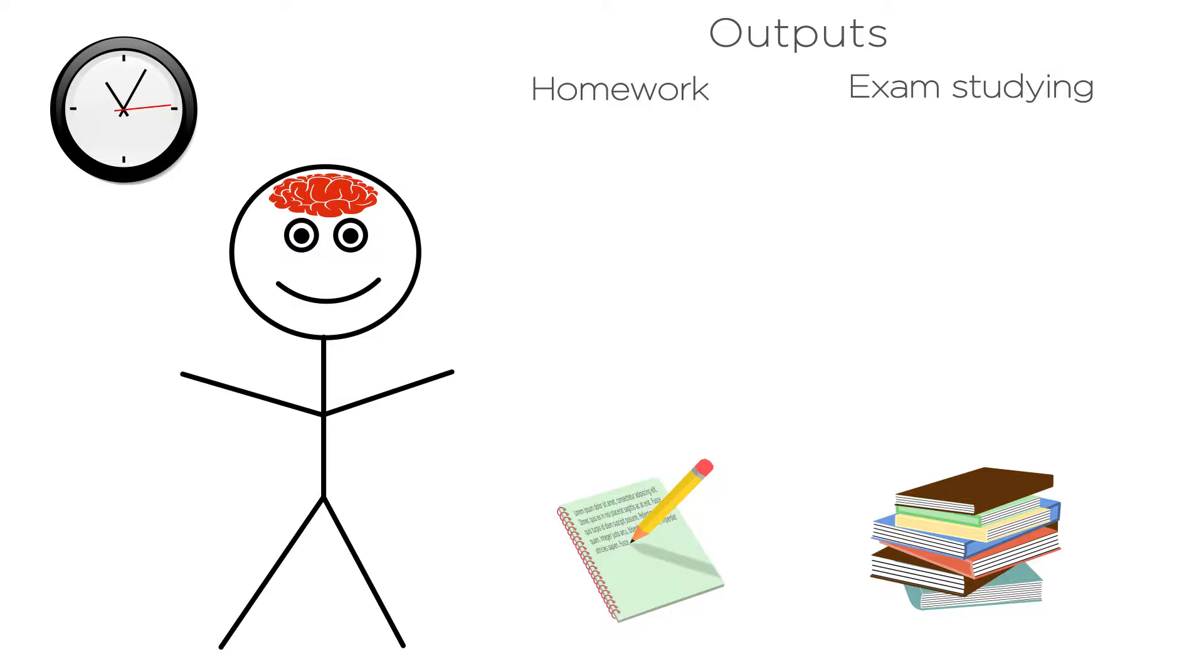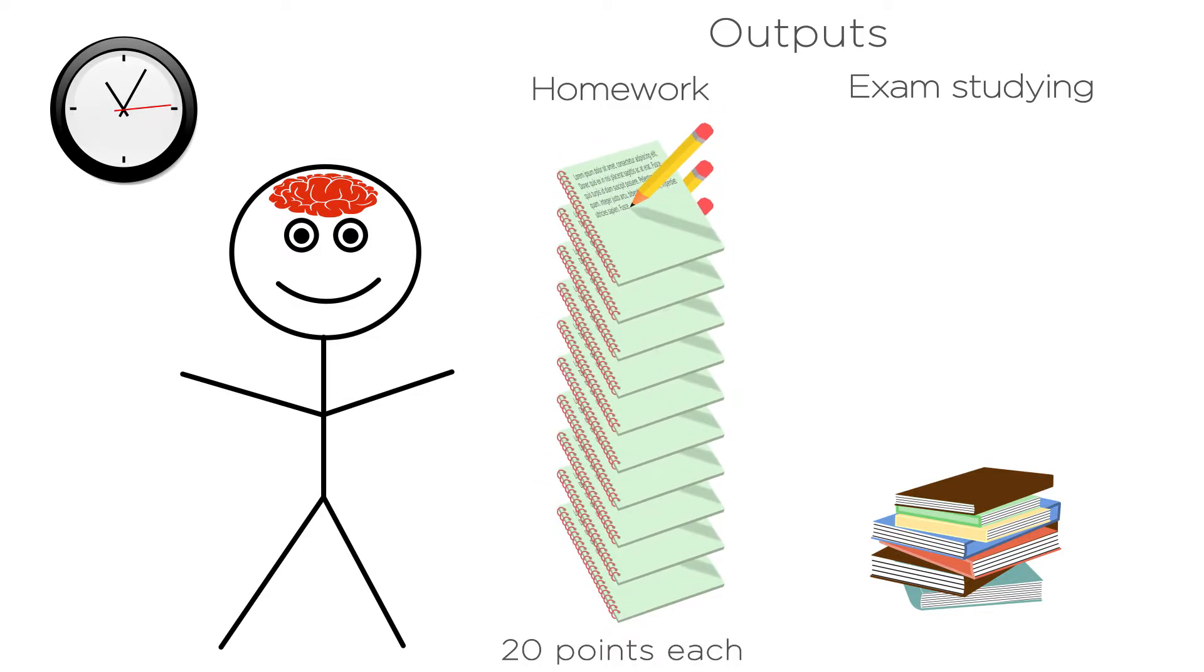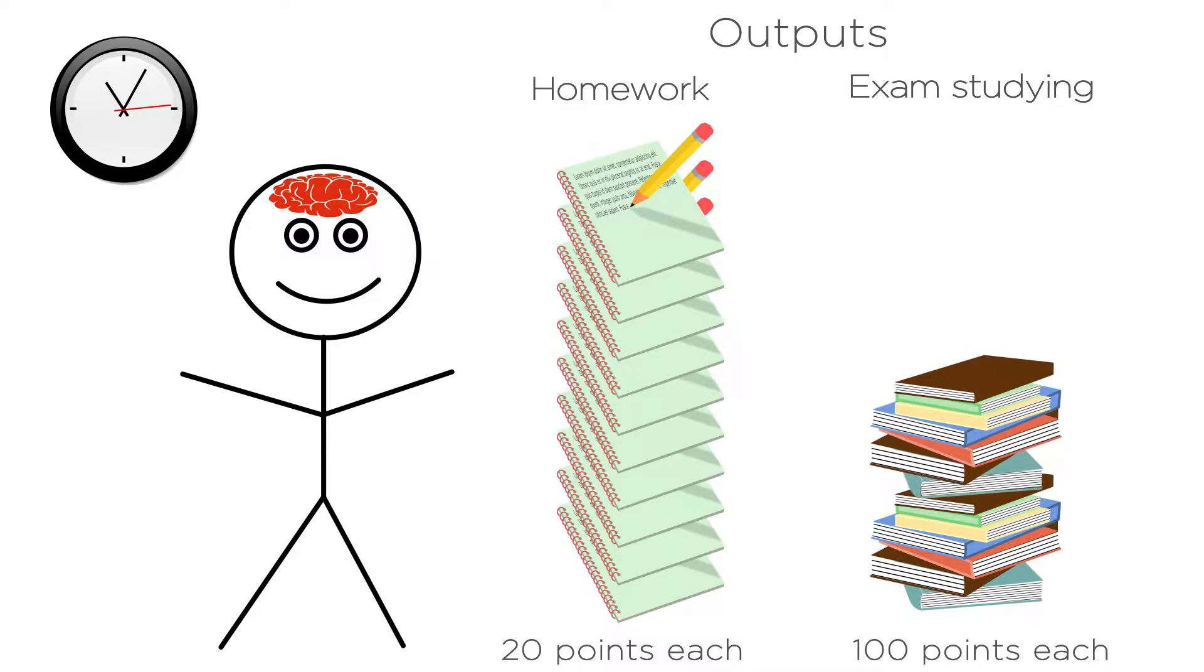Suppose that in a certain course, you have 10 homework assignments worth 20 points each, and two exams worth 100 points each. And suppose that the best you can do, given your limited time, is to do a perfect job on all the homework and blow off both exams, or do a perfect job on the exams and blow off all the homework. Or you can do some combination of the two and do a pretty good job on both.